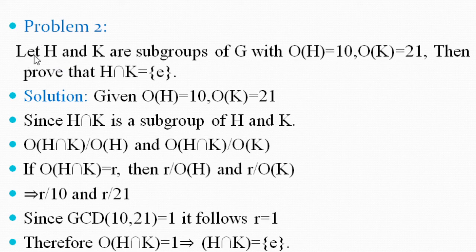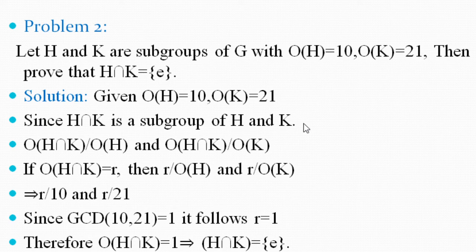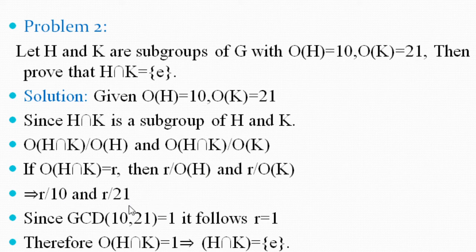Problem 2: Let H and K be subgroups of G where order of H = 10 and order of K = 21. Prove that H ∩ K = {E}. Since H ∩ K is a subgroup of both H and K, its order R divides both |H| = 10 and |K| = 21. Therefore R divides gcd(10, 21) = 1, so R = 1. An order-1 subgroup contains only the identity element, hence H ∩ K = {E}.